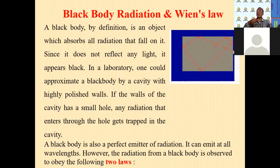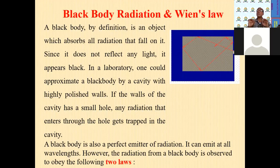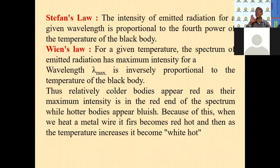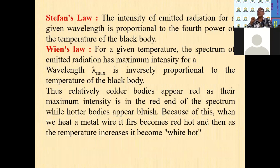The spectrum formed by black body radiation starts increasing with wavelength, reaches a maximum, and then starts decreasing — meaning the black body can emit all wavelengths. The radiations emitted by the black body follow two important laws. The first is Stefan's Law. Stefan's Law states that the intensity of the emitted black body radiation is directly proportional to the fourth power of the temperature of the black body. That is, I is proportional to T to the power 4.